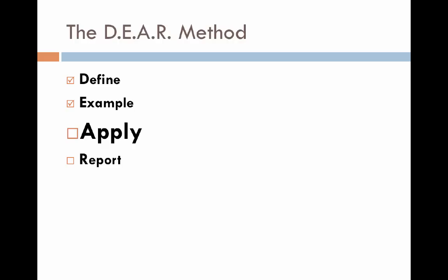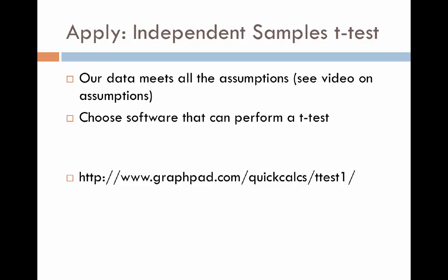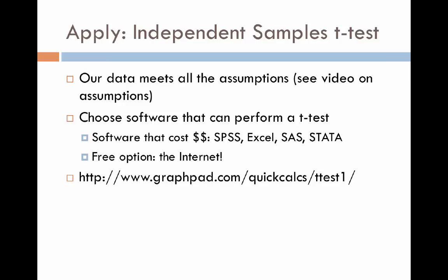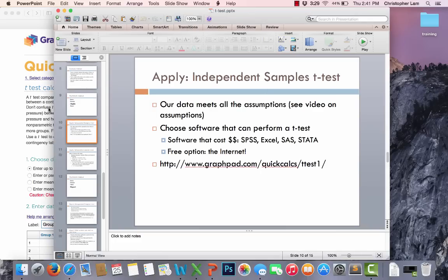Now that we have our scenario, we will apply and walk through the process of running a t-test. A couple of things: first, we're going to assume our data meets all the assumptions — I will have a separate video on testing assumptions. Second, we need to choose software that can perform a t-test. Options that cost money include SPSS, Excel, SAS, or Stata. Or we can choose a free option, which is an online calculator. I'll post the link in the video description. It's a really easy-to-use t-test calculator that only requires an internet connection.